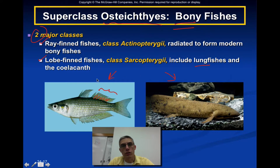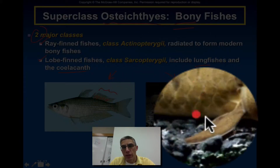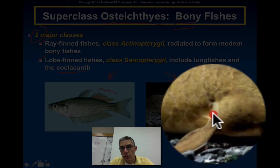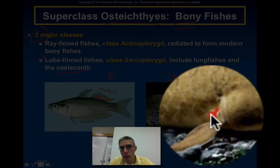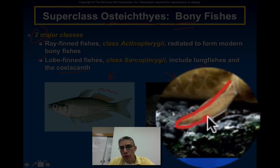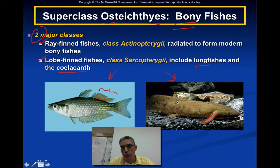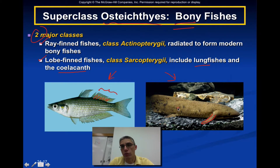The Lobefin fishes include the lungfishes and the very primitive coelacanth. Their fins are a little bit different because they tend to be a little bit longer and usually somewhat fleshy in appearance. In fact, some scientists will actually compare them to rudimentary limbs that you might find in land animals.